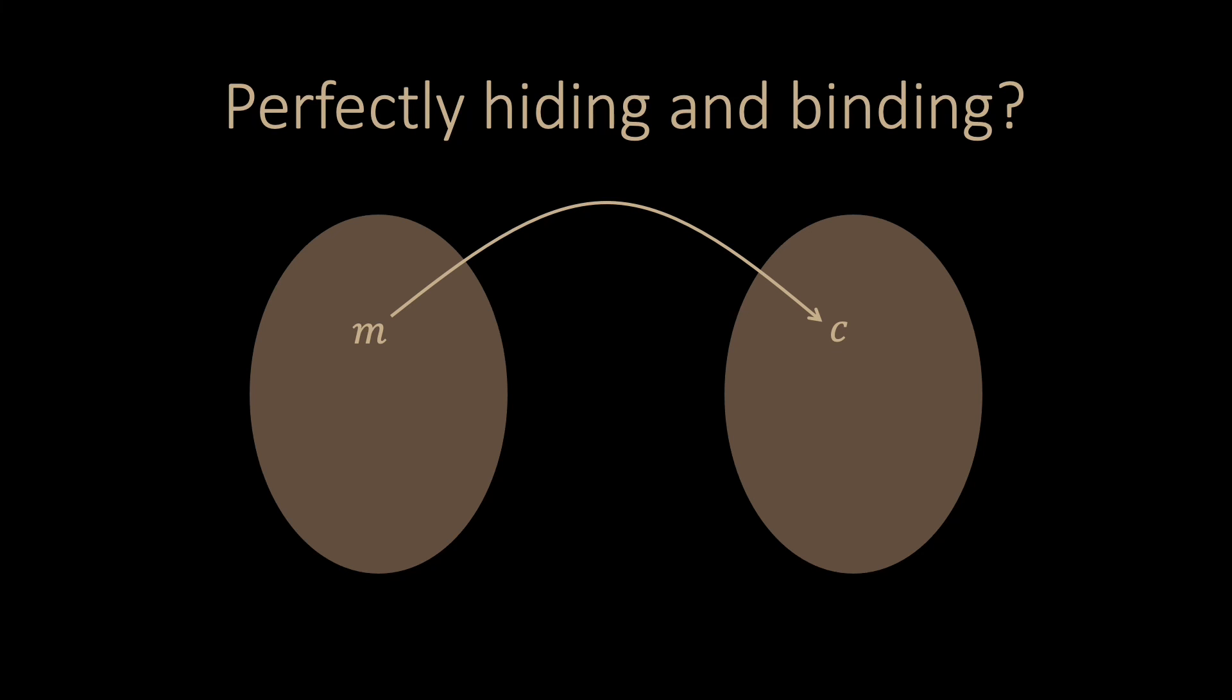But this means that if Sherlock has the committed value c and if he is computationally unbounded, Sherlock can simply brute force all possibilities and find this unique m. Thus the scheme cannot be perfectly hiding.